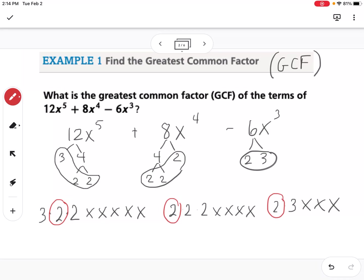So that's all for the numbers that I can take. Then they all have an x, they all have another x, and they all have a third x. But I can't keep going because that third term, I don't have another x.